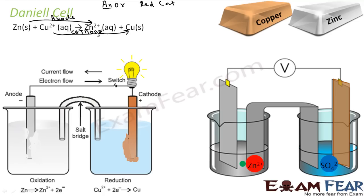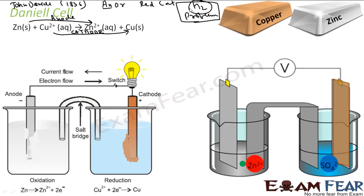We have anode and cathode. This cell was designed by John Daniel, a British chemist, in 1836. The main problem he was trying to solve was the hydrogen bubble problem that existed in the voltaic pile. The voltaic pile also generated electricity but had a hydrogen bubble problem, and he was trying to eliminate that.